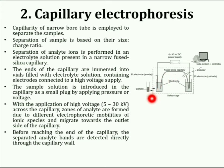The ends of the capillary are immersed into inlet and outlet vials filled with electrolyte solution. Inlet and outlet vials also contain electrodes connected to a high voltage supply. The sample solution is introduced into the capillary as a small plug by applying pressure through hydrodynamic injection or by voltage through electro-kinetic injection. Due to the high voltage across the capillary, zones of analyte are formed due to different electrophoretic mobilities of ionic species, which tend to migrate towards the outlet side of the capillary. Different ions can be separated when their charge-to-size ratio differs.